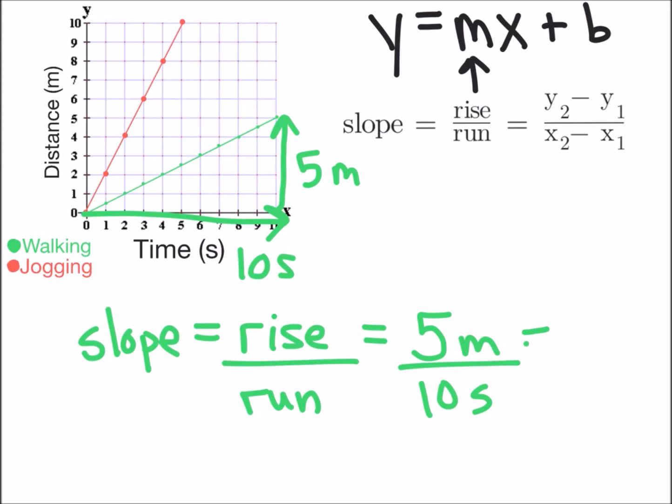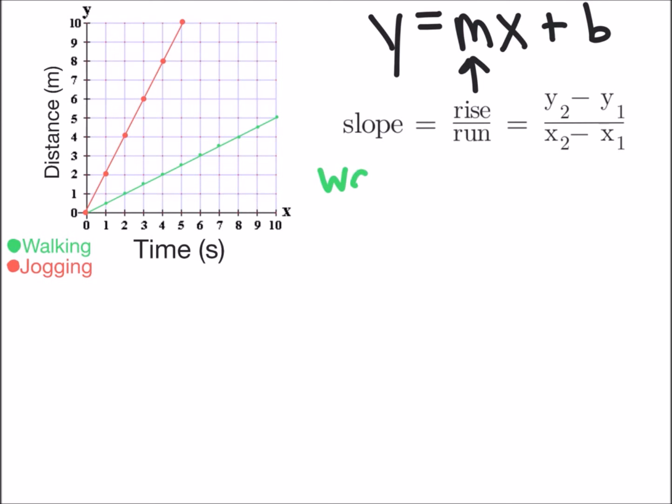Once I do that calculation I'm going to get 0.5 meters per second and that's going to represent my speed of the person that is walking. I'm going to write that down just to keep to compare for later.